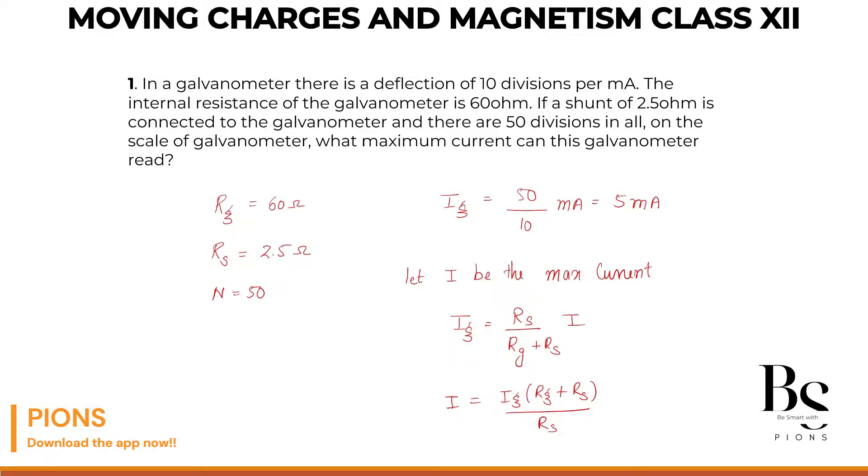Now here, let's put the values. What is IG? IG is 5 milliamps, so 5 into 10 to the power minus 3. RG is 60 plus RS 2.5 whole divided by 2.5. Now let's cancel this 2.5 with this, this is 2. And here it will be 2 into 10 to the power minus 3 into 62.5.